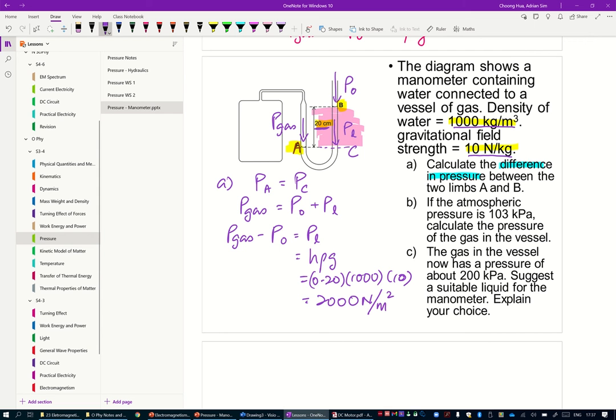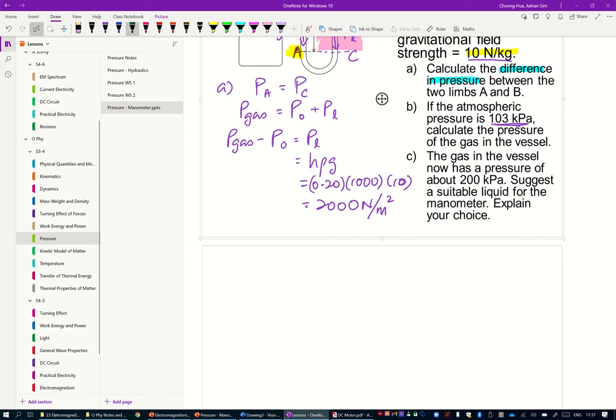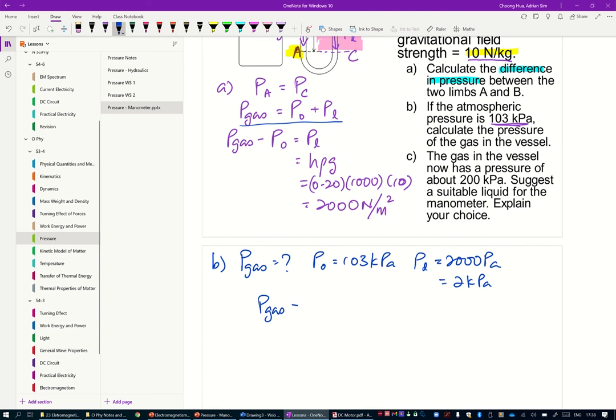Now you are given more information. The atmospheric pressure is now 103 kPa. Calculate the pressure of the gas in the vessel. So you are supposed to calculate the pressure of gas. Atmospheric pressure equals 103 kPa. The liquid pressure you found is 2000 Pa, but that's also 2 kPa. And note what you found earlier, pressure of gas equals atmospheric pressure plus PL. So pressure of gas equals P0 plus PL equals 103 plus 2 equals 105 kPa.